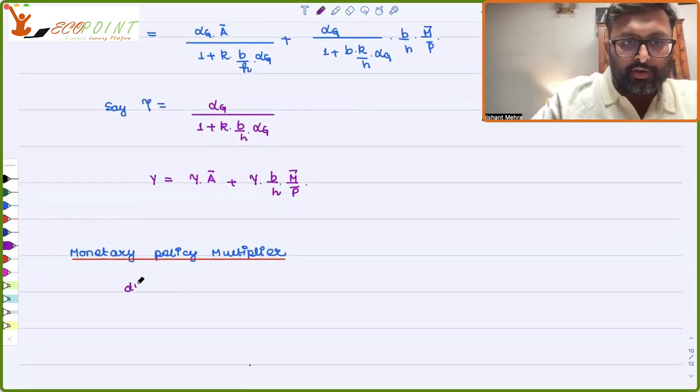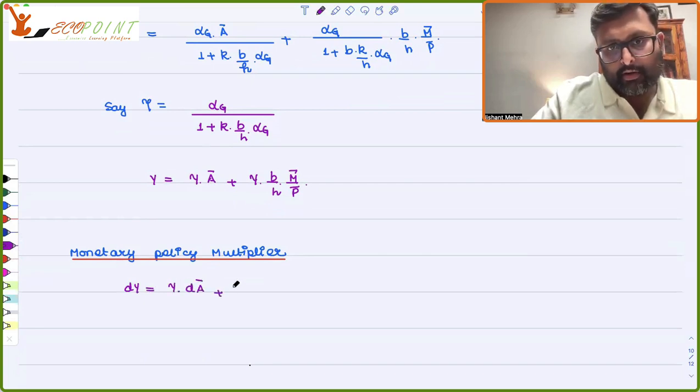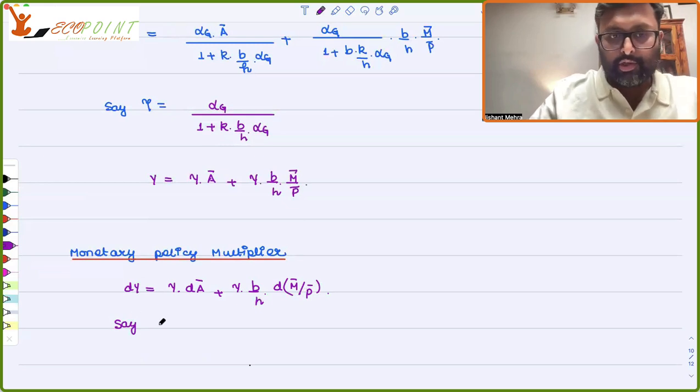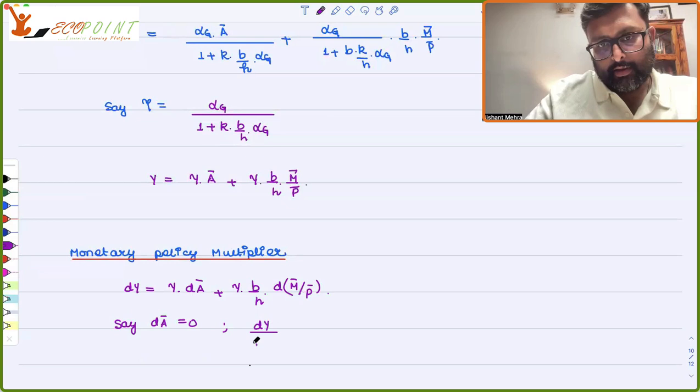And since I want to find out how output is going to change when money supply is going to change or real money supply is going to change, I can put D A bar equals to 0.